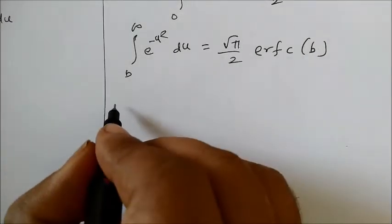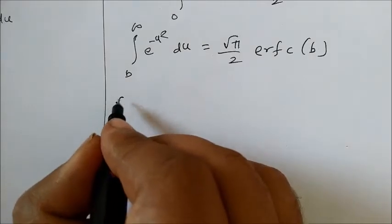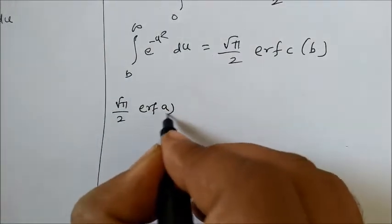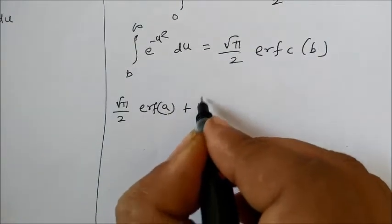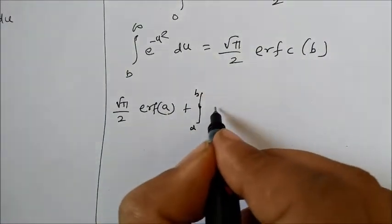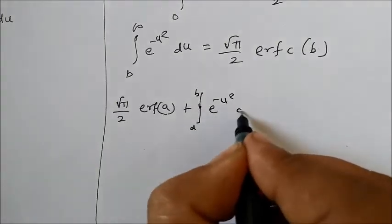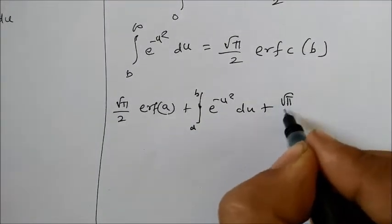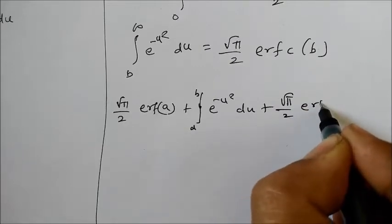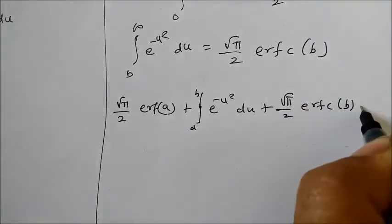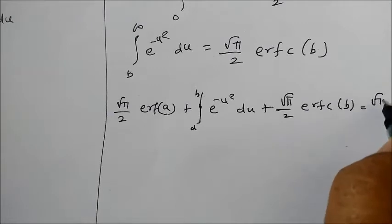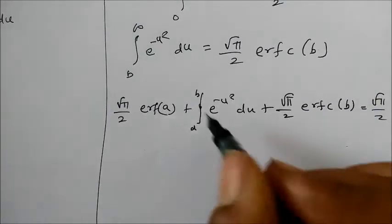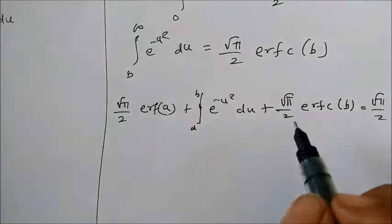What we get is root pi by 2 erf of a plus integral a to b, e to the power minus u square du, plus root pi by 2 erfc of b is equal to root pi by 2. If I take this root pi by 2 over here, if I multiply...